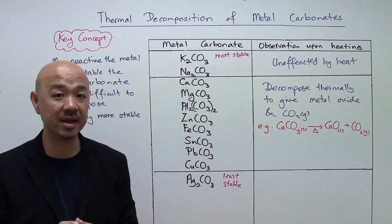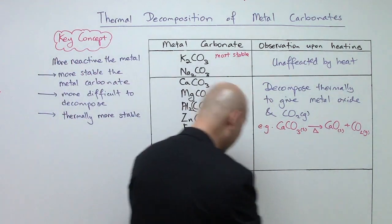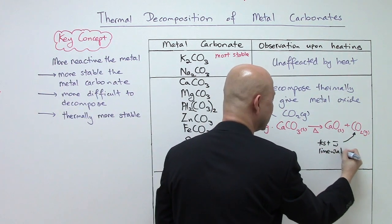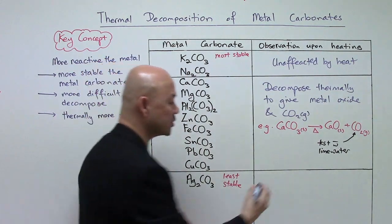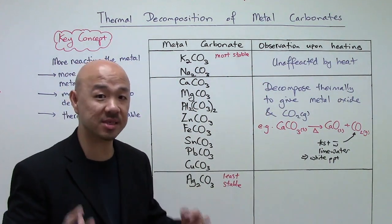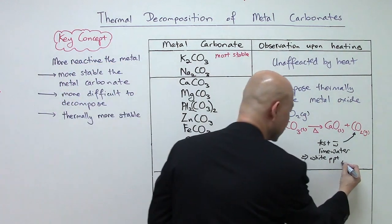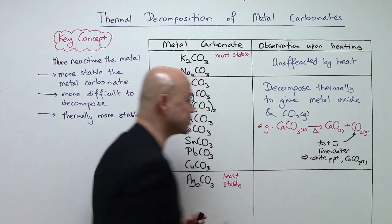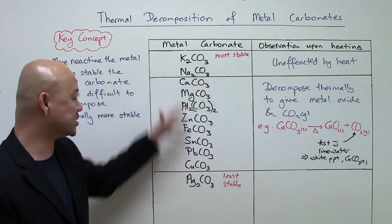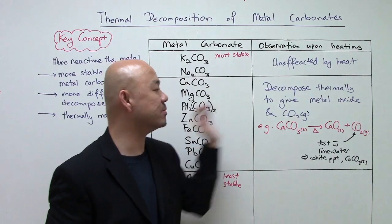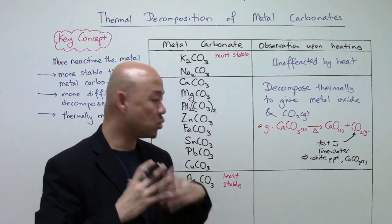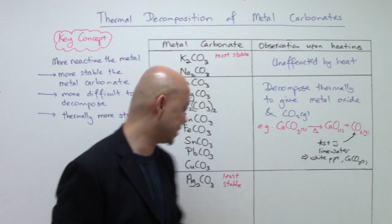You can test the carbon dioxide produced using the limewater test. Carbon dioxide reacts with limewater — which is calcium hydroxide solution — to give a white precipitate, which is calcium carbonate. So if you start with calcium carbonate or any other carbonate in this list, you'll get your metal oxide and carbon dioxide, and testing with limewater will give you a white precipitate.